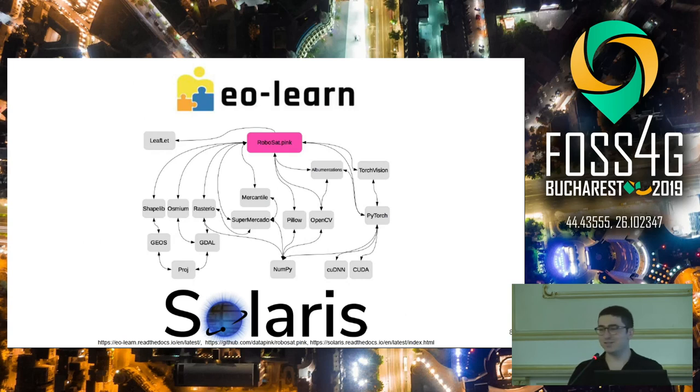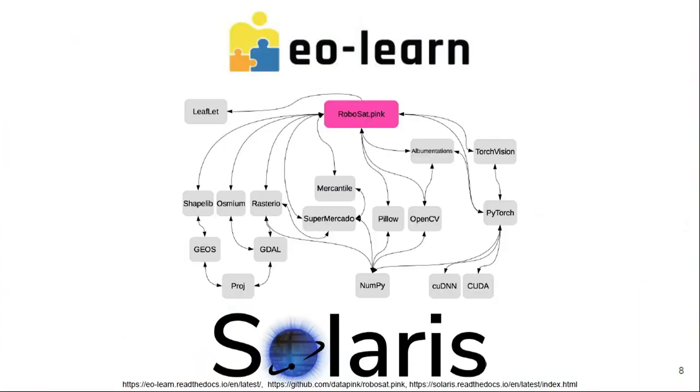Luckily, there is a litany of open source libraries that have made machine learning on satellite imagery more accessible and powerful than ever. EO-Learn from Synergize allows you to build workflows that handle multi-temporal and multi-resolution data. RoboSat Pink is integrated with OpenStreetMap and allows you to easily visualize labels and predictions. And Solaris from SpaceNet allows you in a couple of lines to do inference using pre-trained models on SpaceNet data to predict roads and buildings. Still, there's room to grow in fully leveraging the multi-spectral nature of satellite imagery.